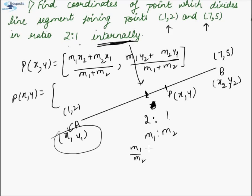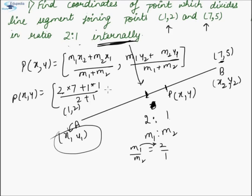M1:M2 is 2:1, so M1 corresponds to 2 and M2 to 1. x2 is 7 and x1 is 1, over M1+M2 that is 2+1. Similarly, for the y-coordinate we have 2 into y2 that is 5, plus 1 into y1 that is 2, over 2+1.